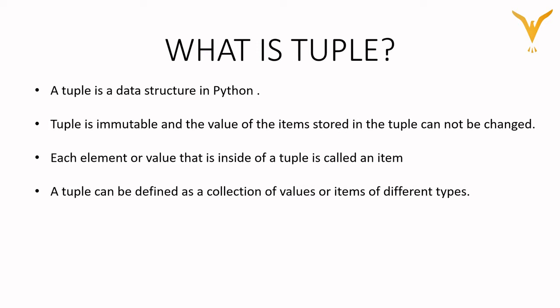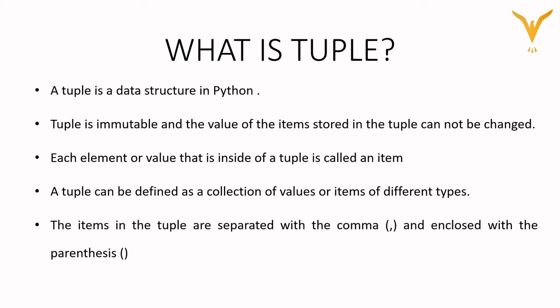We can define tuple as a collection of values or items of different types. It means whatever values are stored inside a tuple can be of different data types. The items in the tuple are separated by commas and are enclosed within parentheses. So to create a tuple we have to use round braces and the elements inside the tuple are separated by commas.